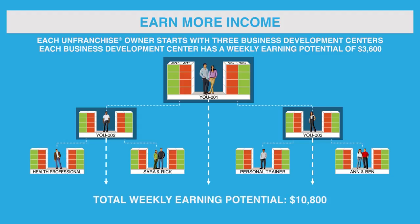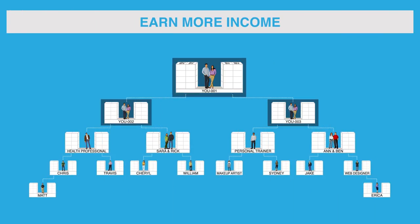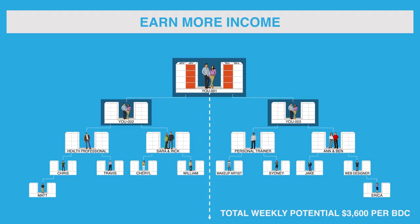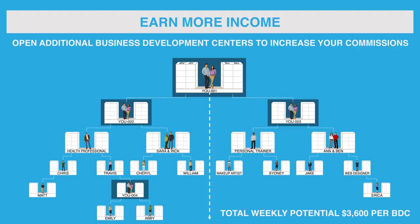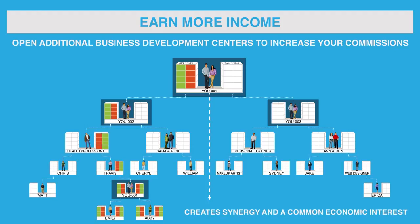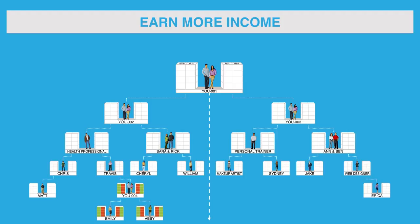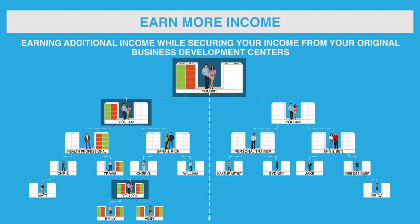The total weekly earning potential is $10,800. Although each business development center can earn a maximum of $3,600 per week in commissions, the income potential with an unfranchised business is unlimited. Simply open and develop additional business development centers to increase your commissions. You are able to open an additional business development center the first time one of your business development centers receives commissions for reaching the $5,000 and $5,000 BV criteria. Opening additional business development centers allows you to increase your income potential, secure your original business development center's income, and motivate your organization with added volume. This creates synergy and a common economic interest. All the BV and IBV generated in the left and right organizations of your fourth or more business development centers accrues toward earning additional income while securing your income from your original business development centers.